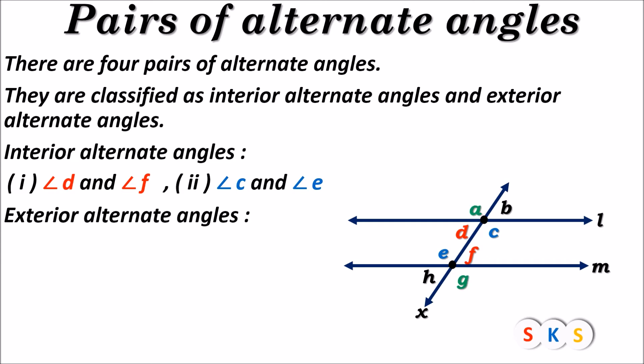In this figure, angle A and angle G is one pair of exterior alternate angles. Angle B and angle H is the next pair of exterior alternate angles. Angle A and angle G are outside of those two parallel lines and they are cross angles. Angle B and angle H are also outside the parallel lines and they are cross angles.